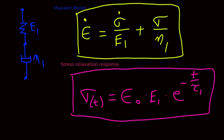In a Maxwell model, as we saw in a previous video, a spring and a dashpot are connected in series. The differential equation that governs this model is enclosed here: ε̇ = σ̇/E₁ + σ/η₁, where E₁ is essentially the stiffness of the spring and η₁ is the viscosity of the fluid in the dashpot.